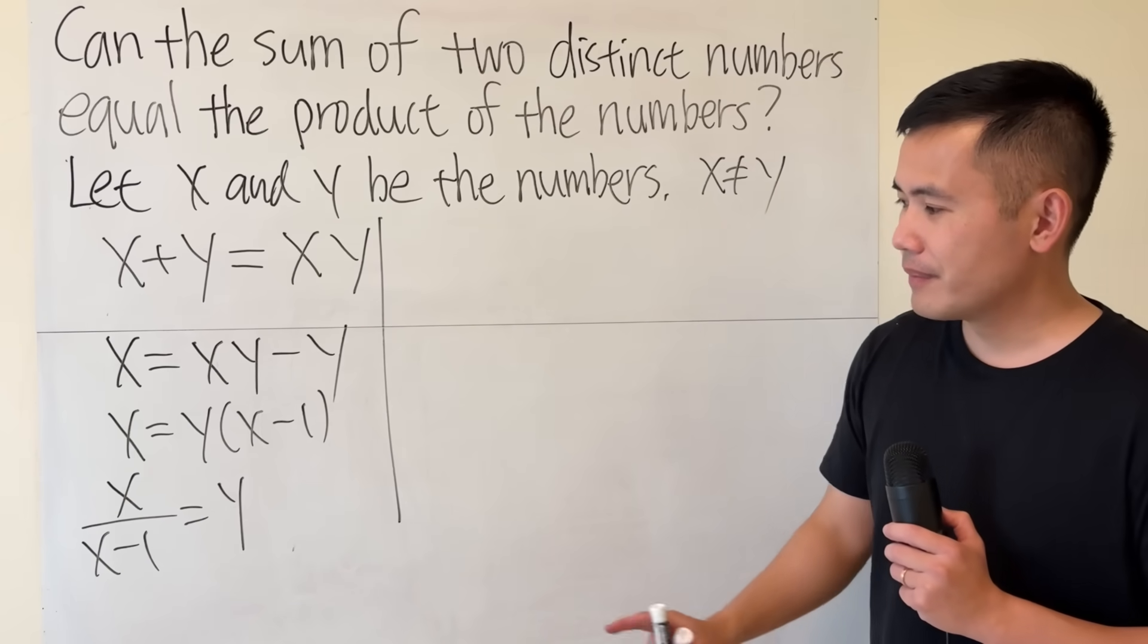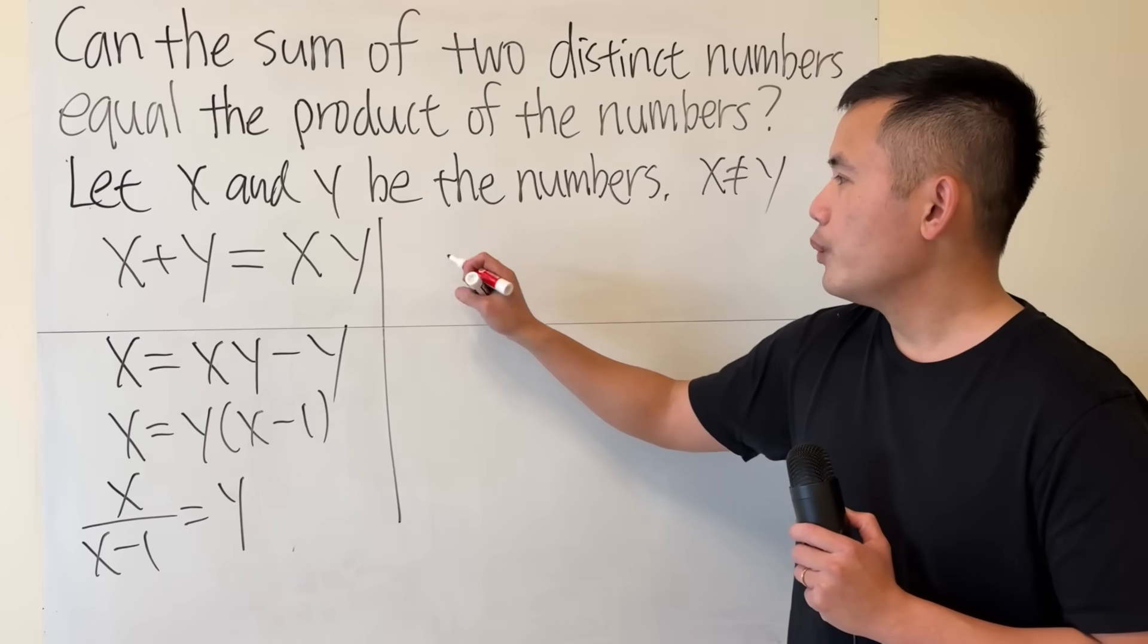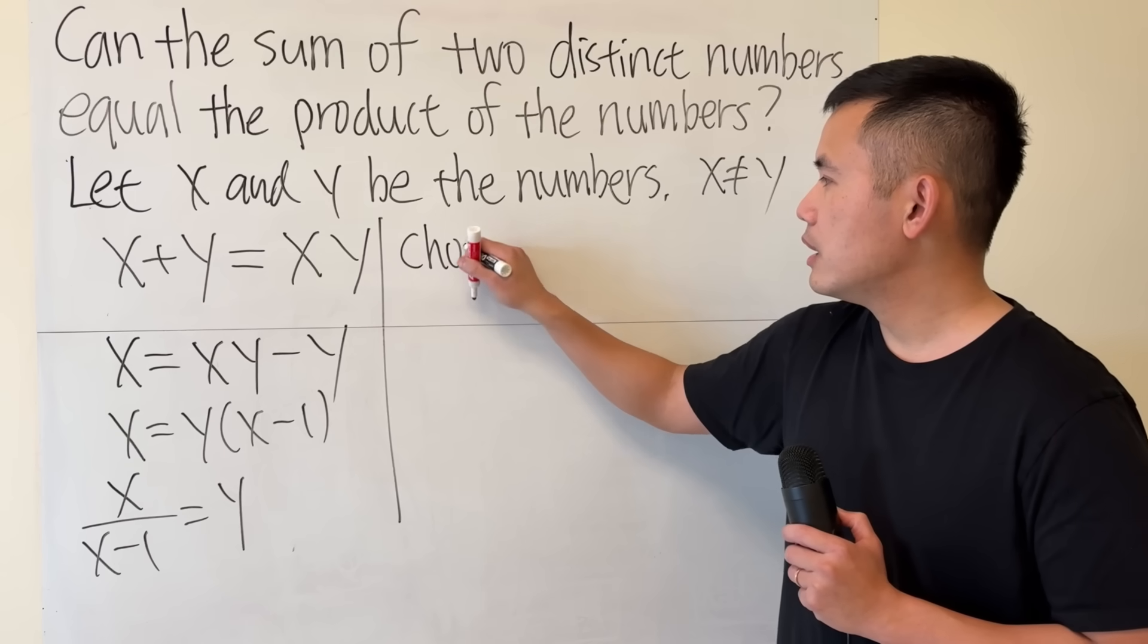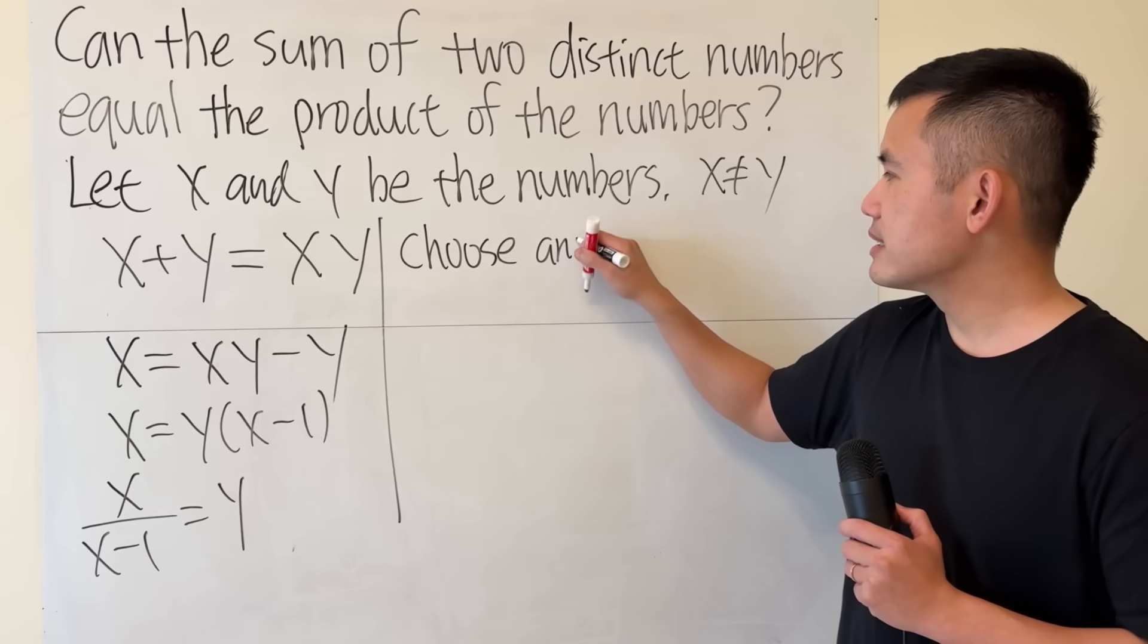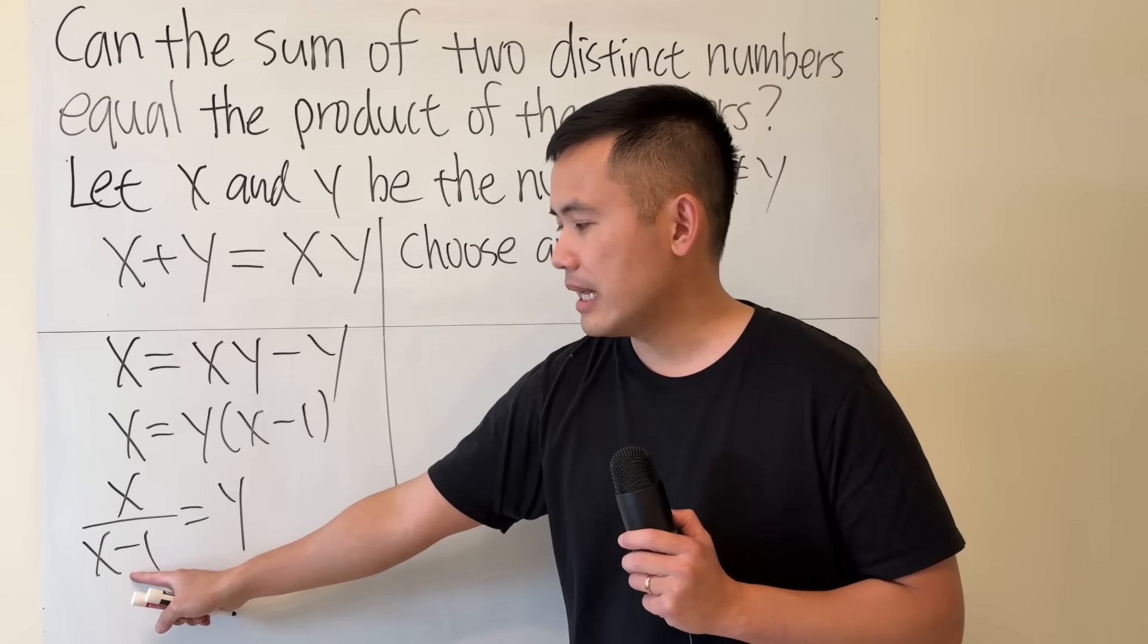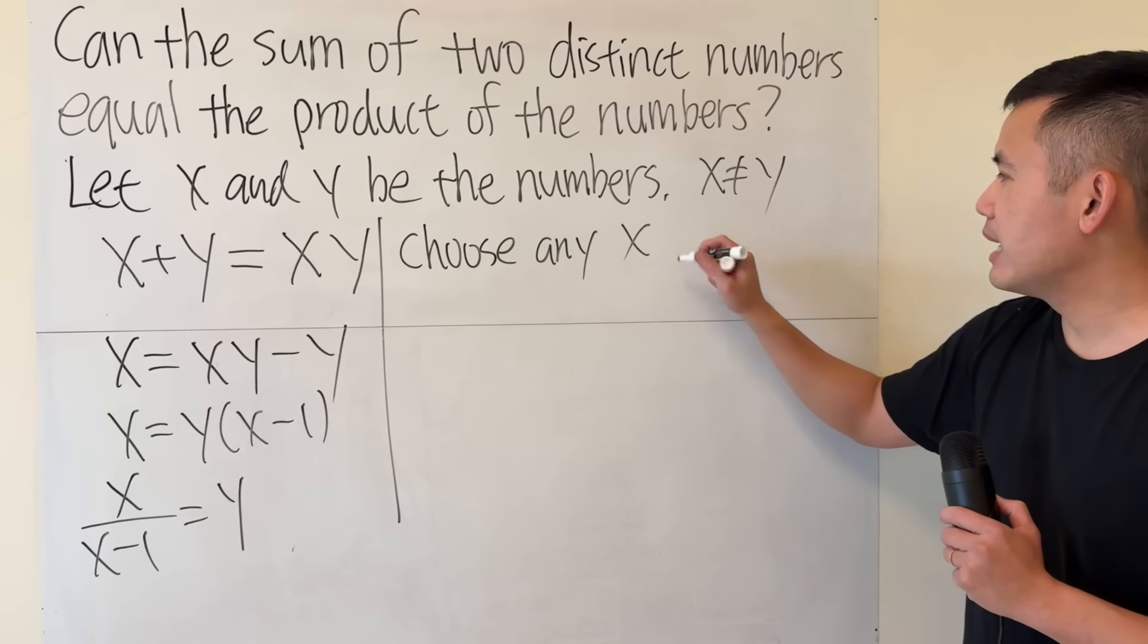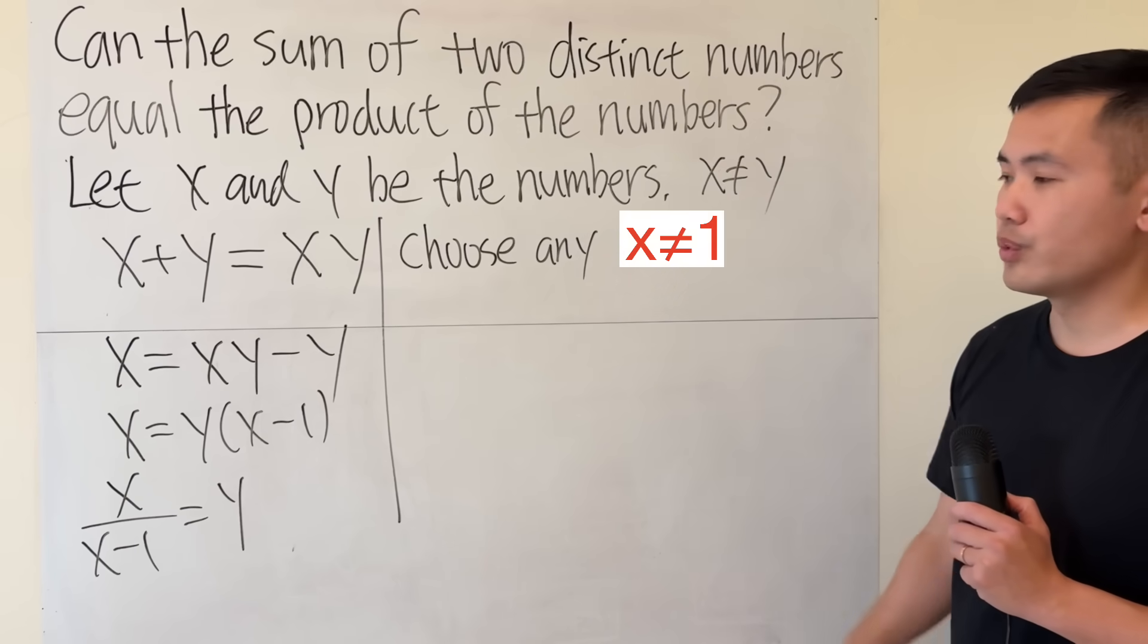What does that mean though? Here, y is depending on x. So right here, we are going to choose any x, but there's a restriction. x cannot be 1, because otherwise we are dividing by 0. So choose any x, but make sure that x is not equal to 1.